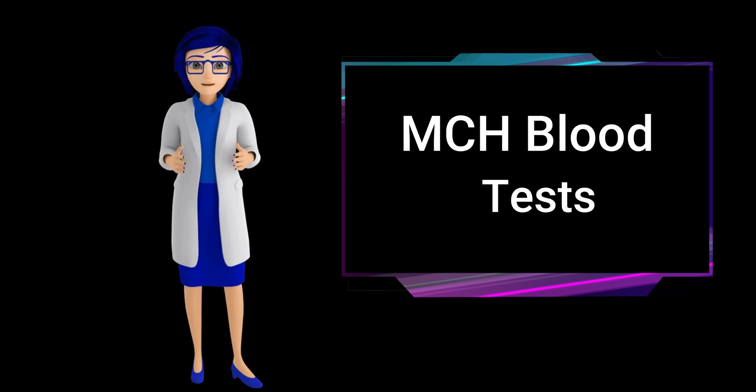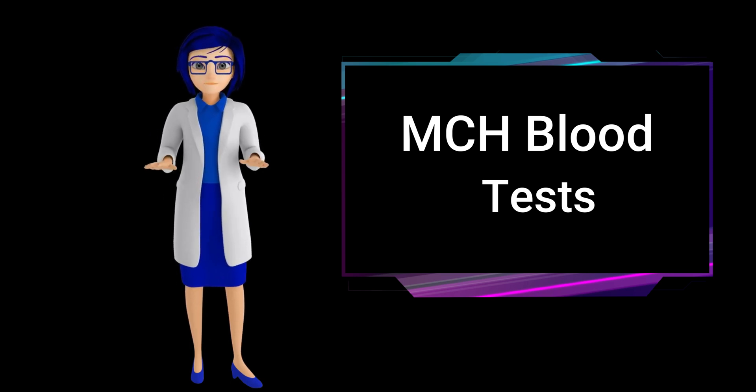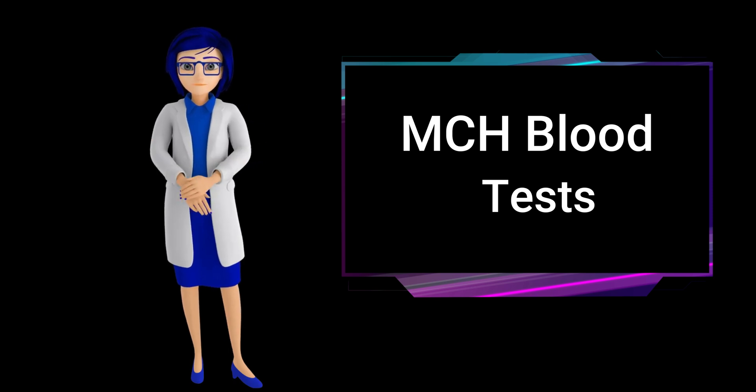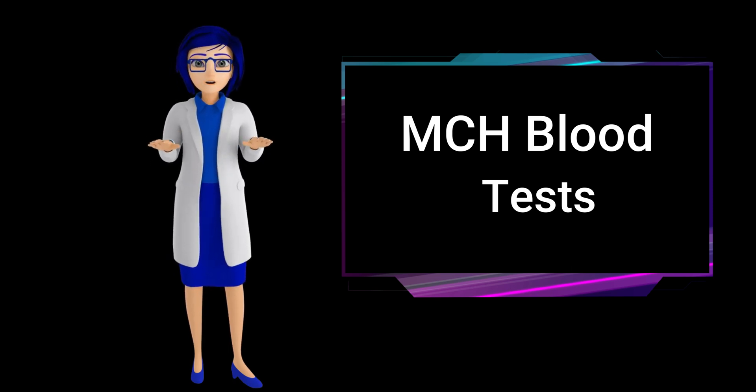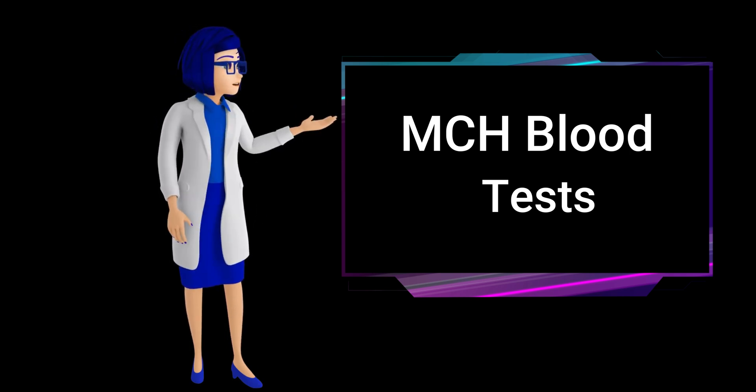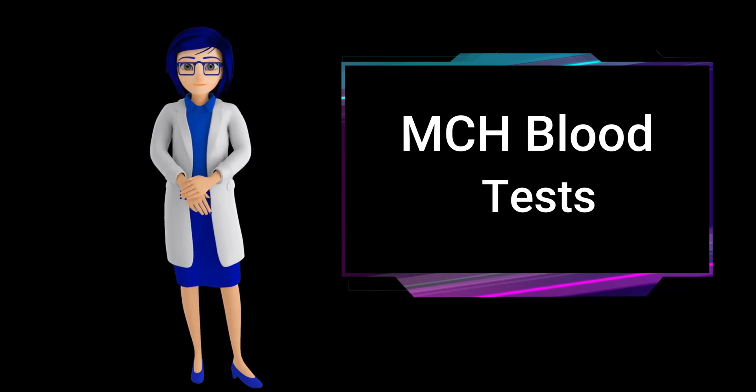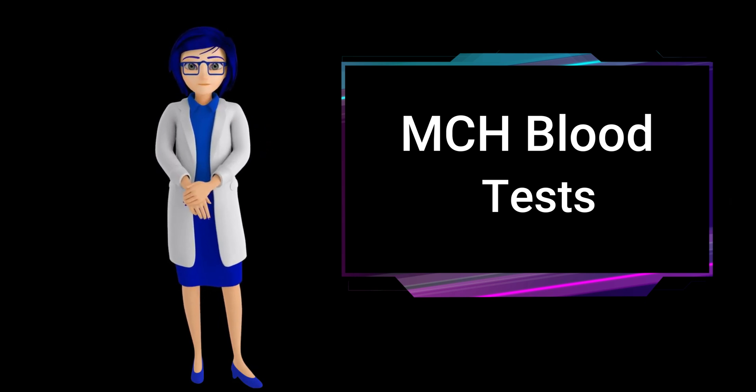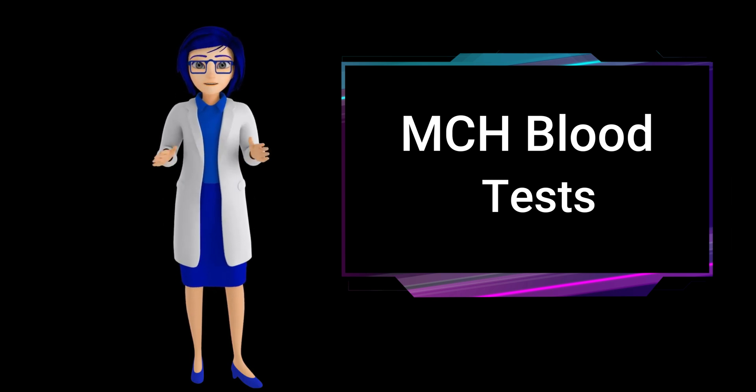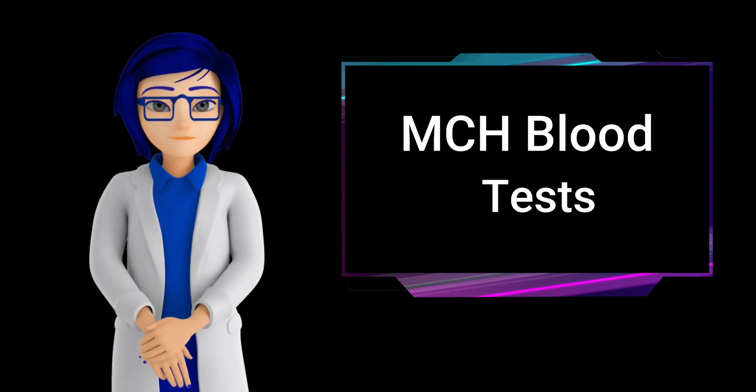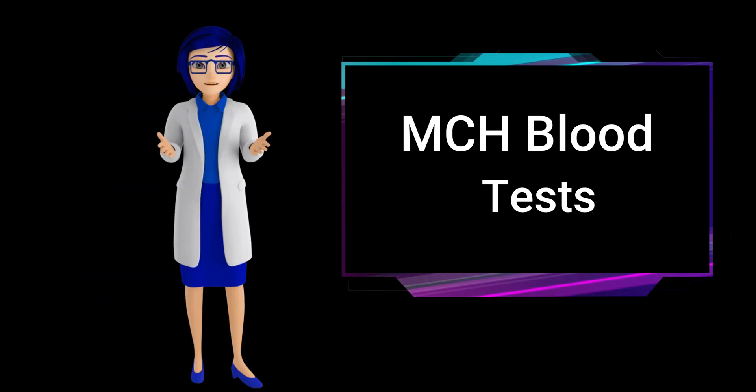MCH normal range is calculated by dividing the total amount of hemoglobin by the number of red blood cells in the blood sample. It provides information about the average amount of hemoglobin in each red blood cell. The MCH blood test value helps diagnose and monitor various types of anemia and other blood disorders. Metropolis Labs is a well-known diagnostic and pathology lab service provider in India. They offer various tests, including the MCH blood test, to assess various aspects of an individual's health.